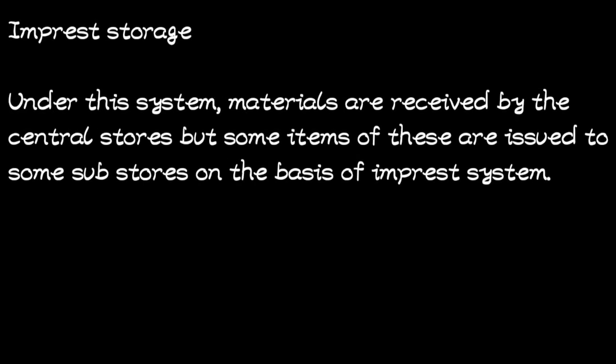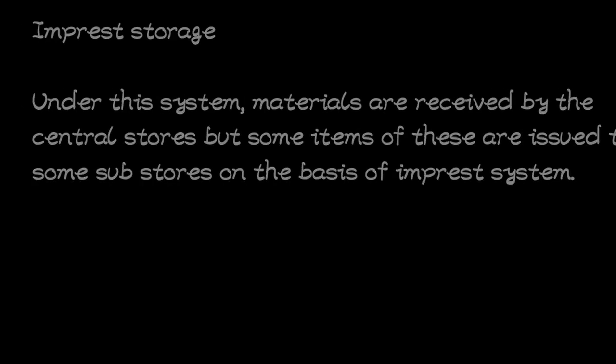The last storage system is the imprest storage system. Under this system, materials are received by the central stores but are also issued by sub-stores on the basis of an imprest system. Some materials are kept in sub-stores at the branches, but the company still maintains a central store. The imprest system is therefore a mix of both centralized and decentralized storage, where some materials are kept at the central store and some at sub-stores in the branches or departments.